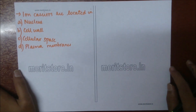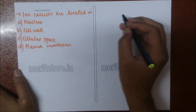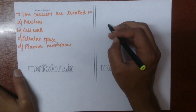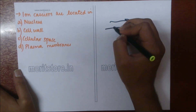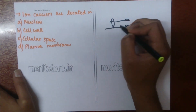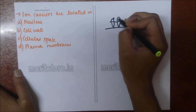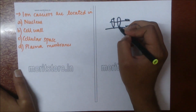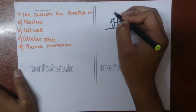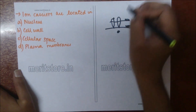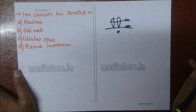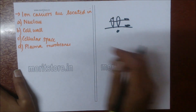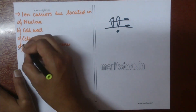Ion carriers are located in: A) nucleus, B) cell wall, C) cellular space, D) plasma membrane. Plasma membrane has ion carriers. They attach to ions and transfer them from extracellular space to inside, or from inside to outside, maintaining electrode potential. These are present in plasma membranes.